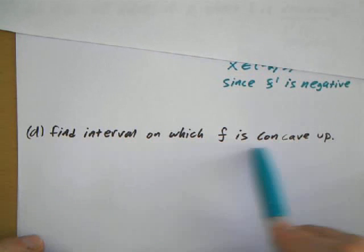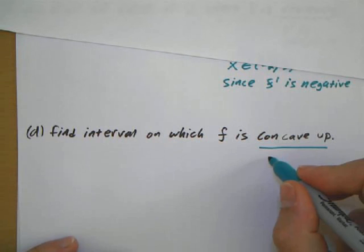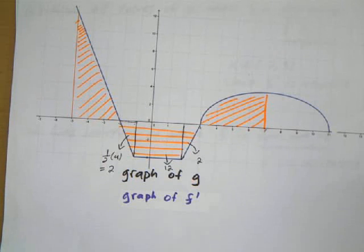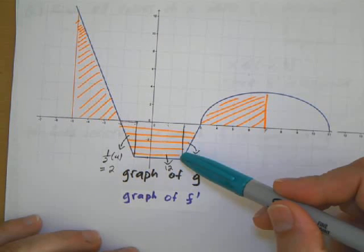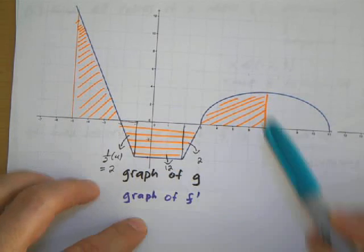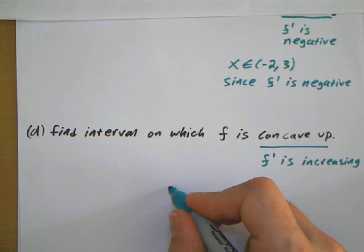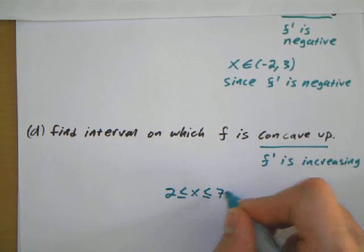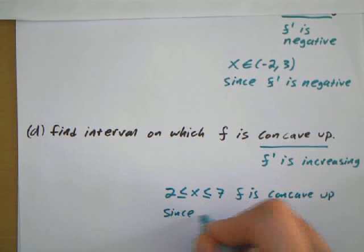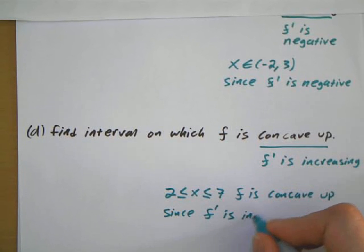Part D: Find the interval on which f is concave up. Concave up in terms of the first derivative is where f prime is increasing. Now increasing on this graph looks like this graph is going up from the x value of 2 all the way to 7. So from 2 to 7, it's increasing. So you would say from 2 less than x to 7, f is concave up.